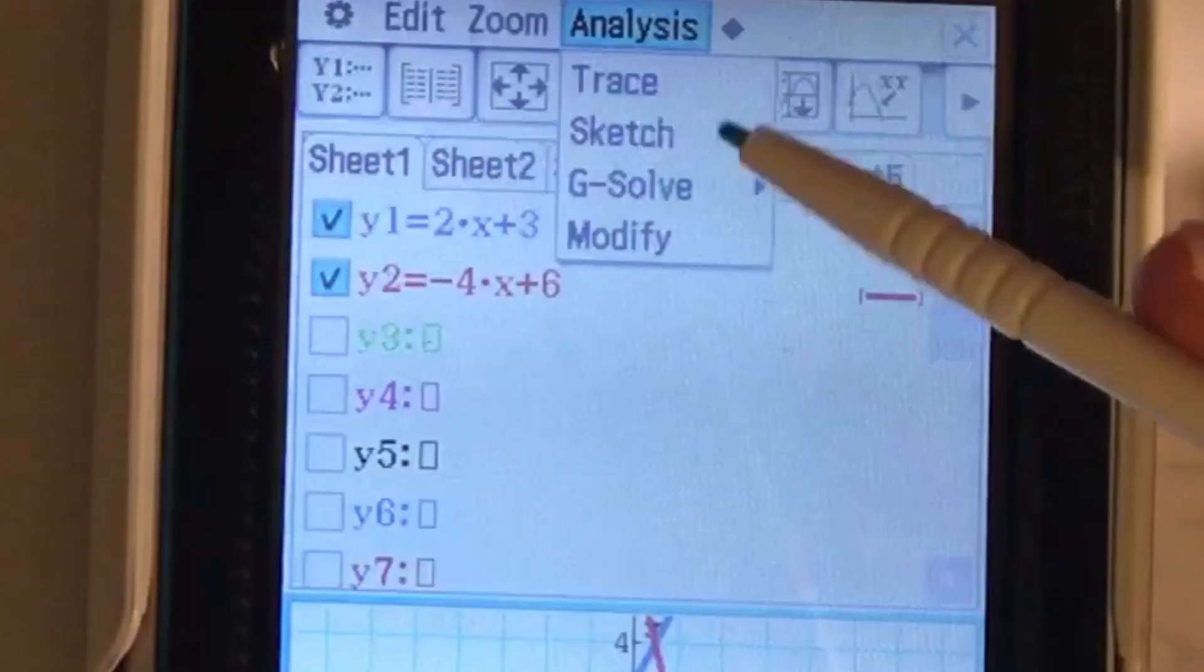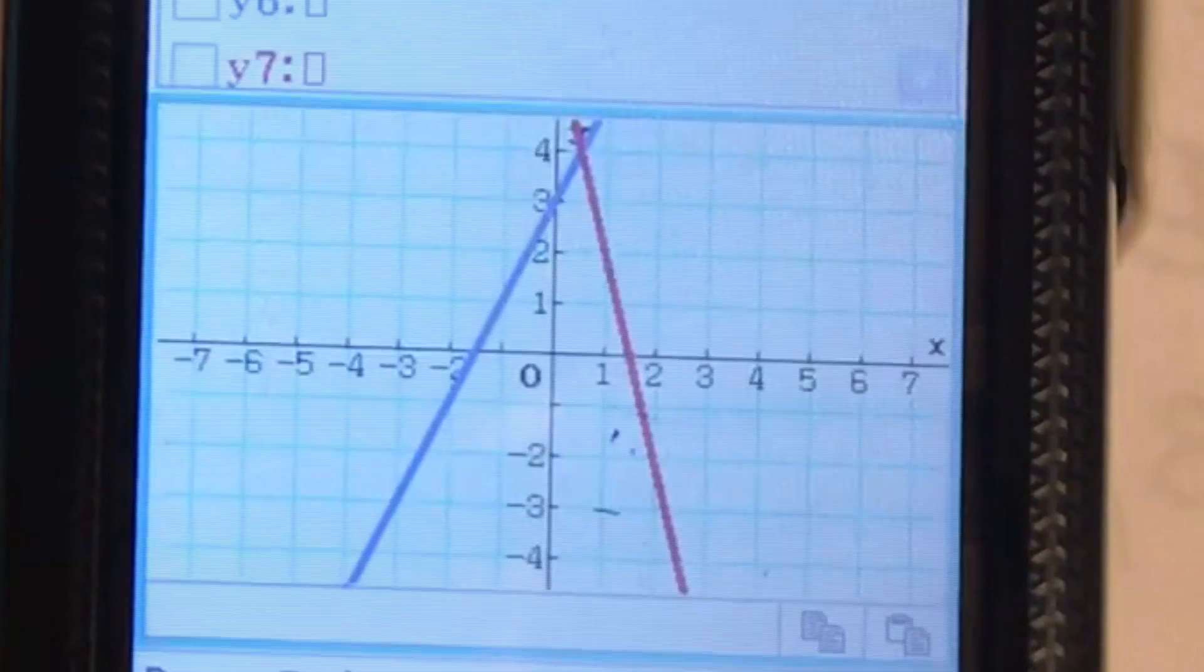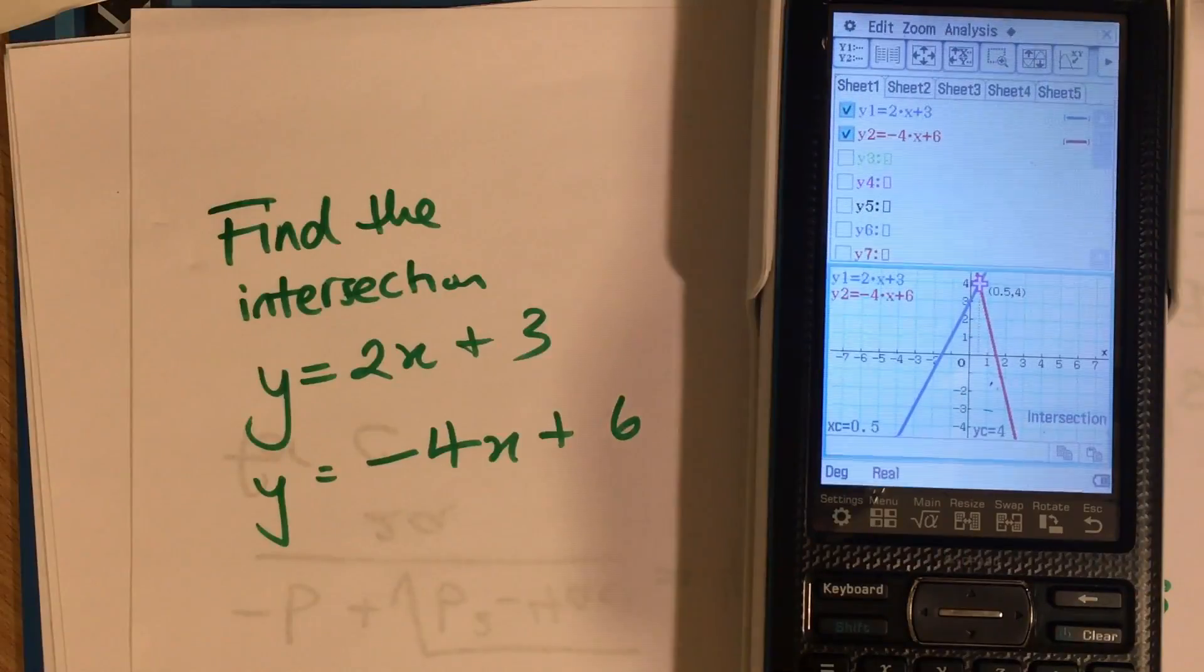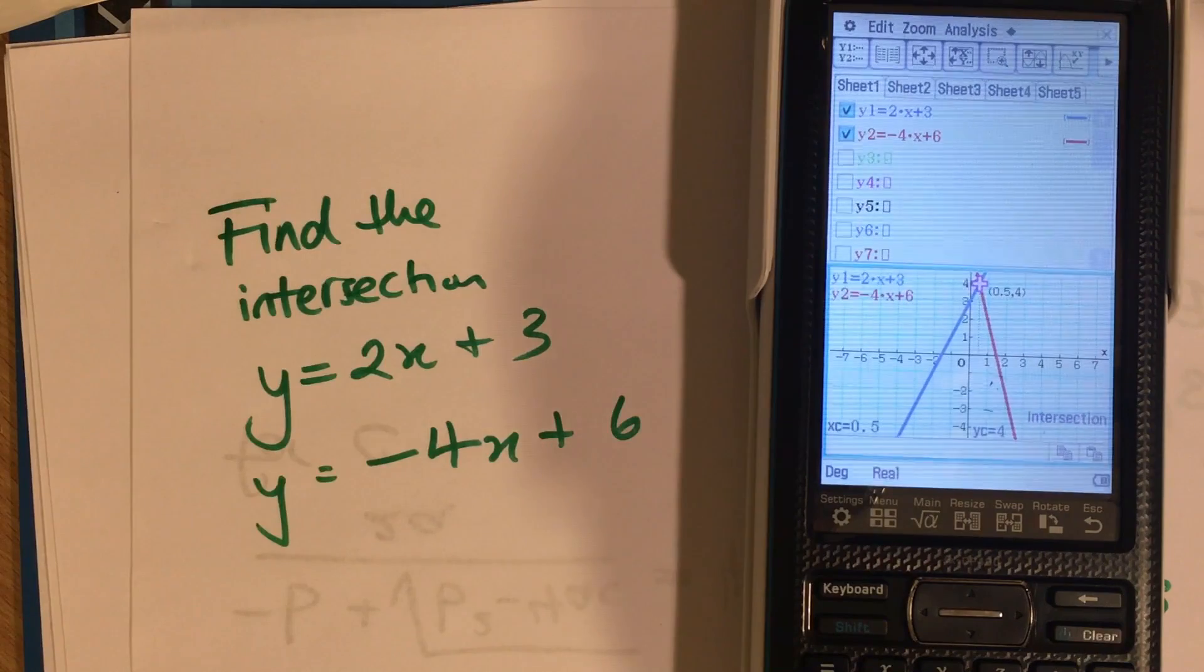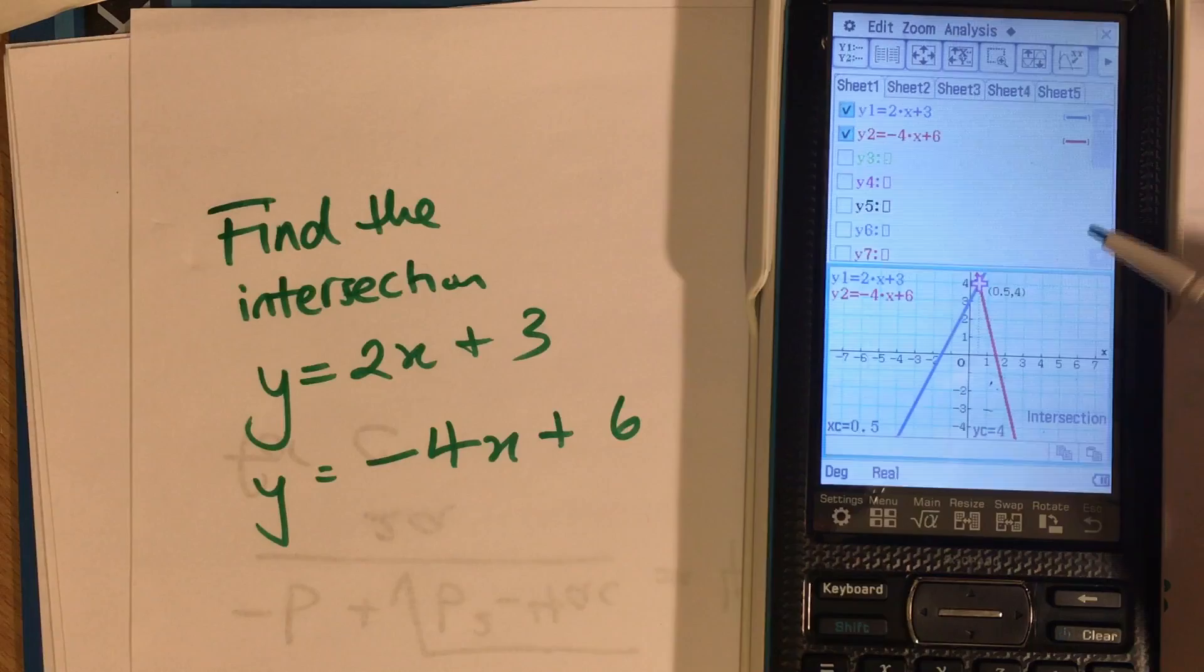What we can do is if we go to analysis, g solve intersection, tell you where those are. And it's told us exactly where those two points meet up, when x is 0.5 and y is equal to 4, we get the point of intersection.